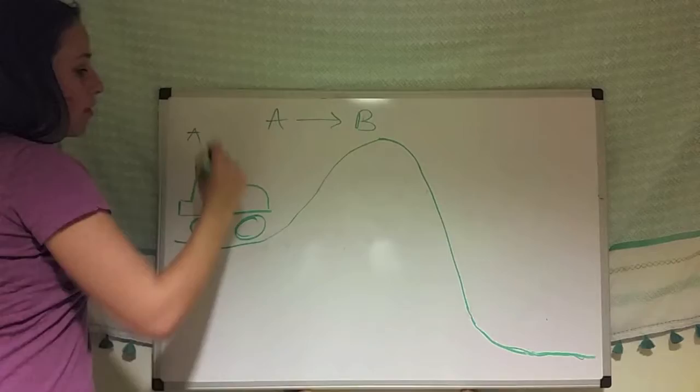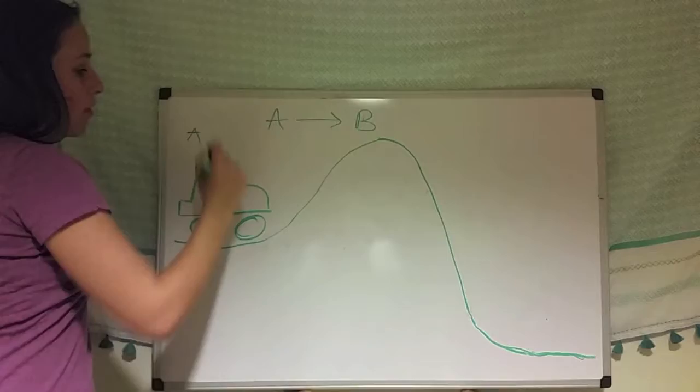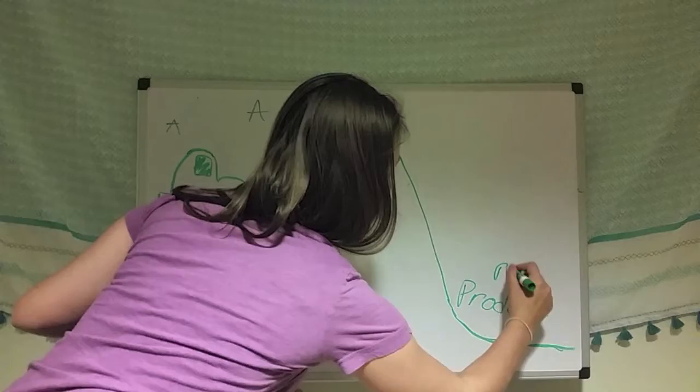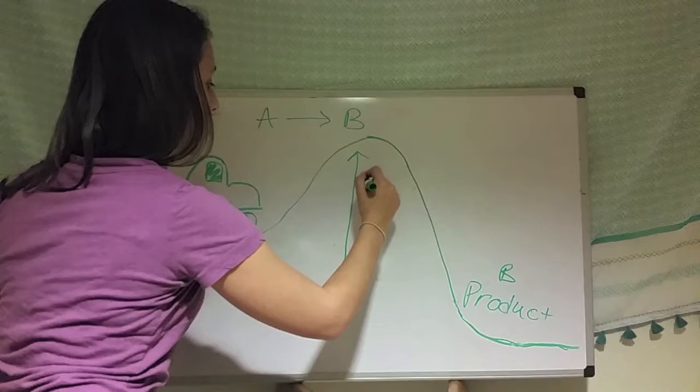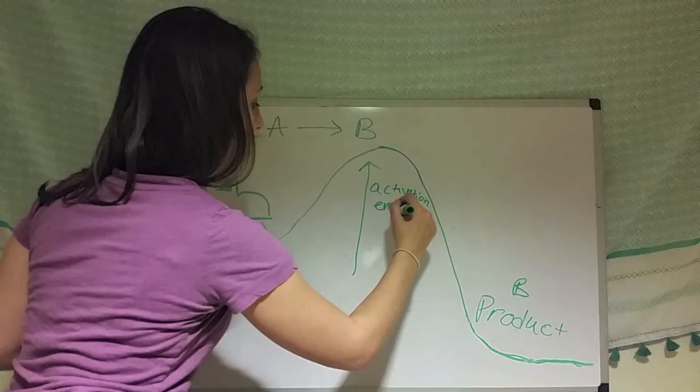So on this side we're on A, and the product we're forming is B. And in order to get to B, we need to get over the activation energy to form a product.